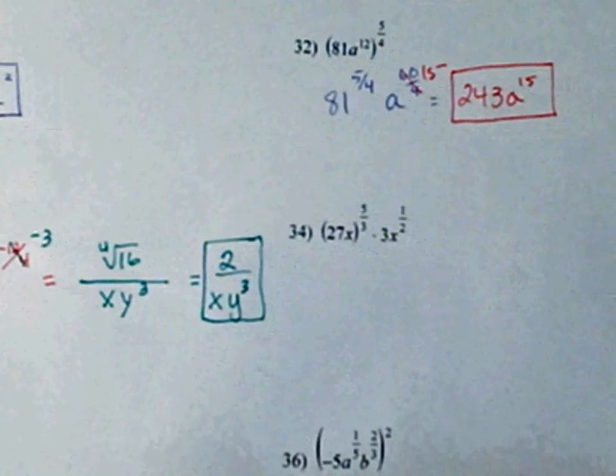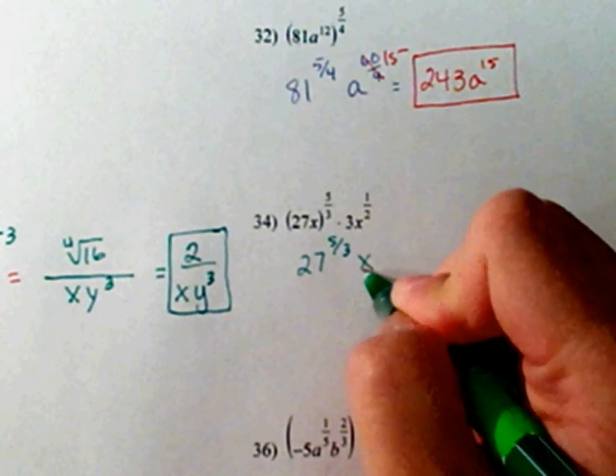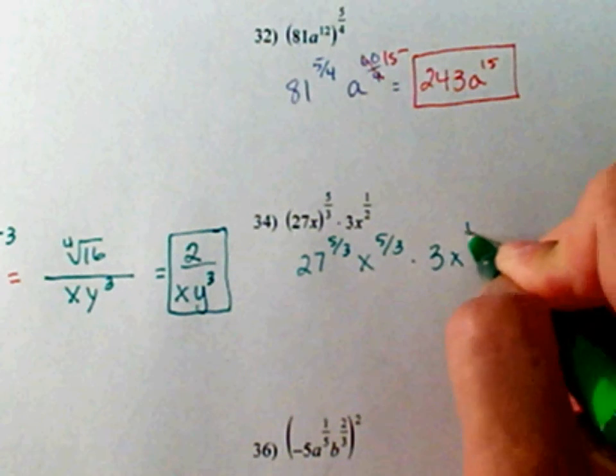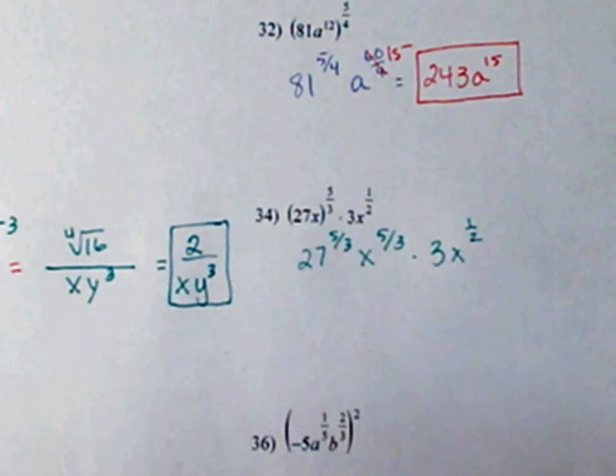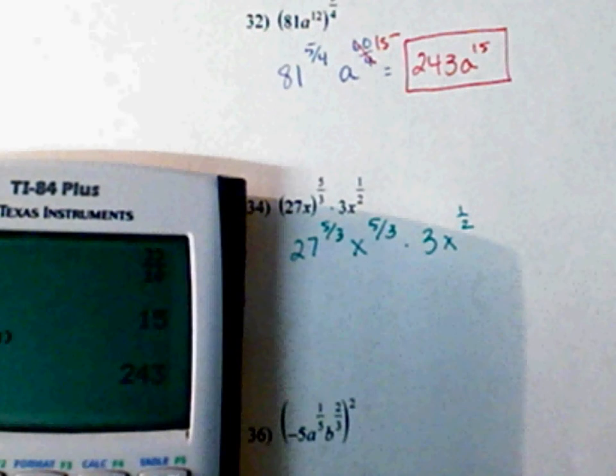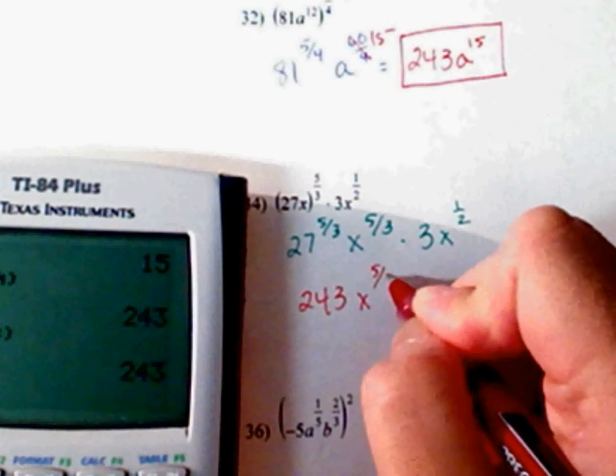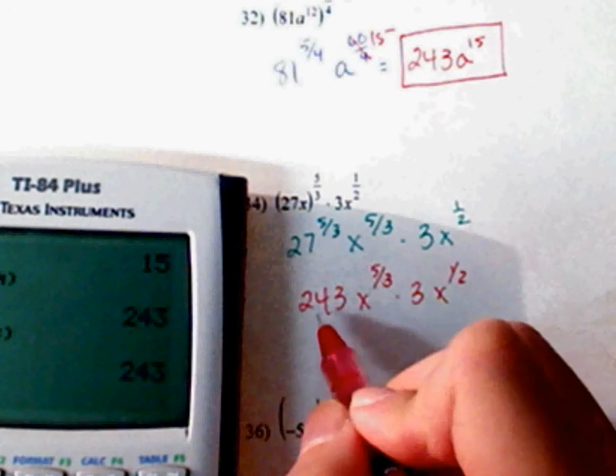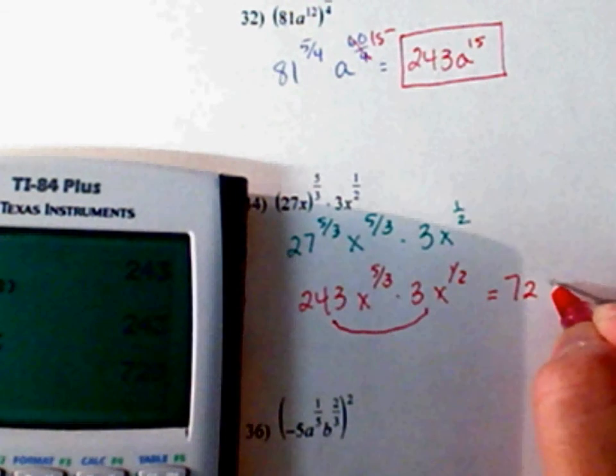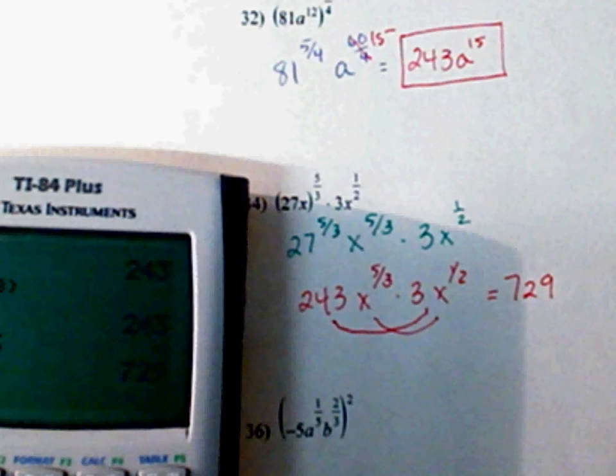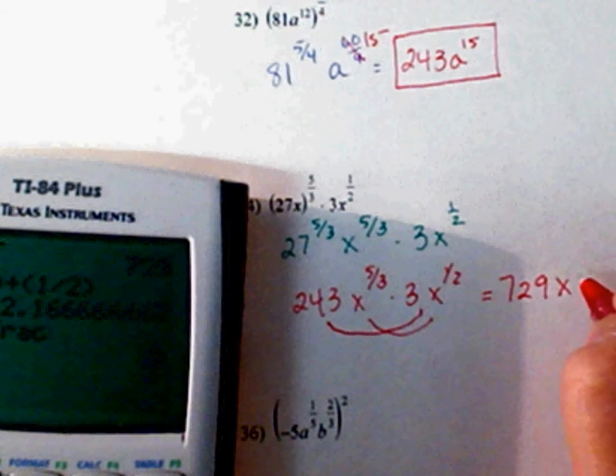Number 34. 27 is also to the 5 over 3 power x. 5 to the 3rd times 3x to the 1/2. What is 27 to the 5/3? See if you can simplify that. Try it on your calculator first if you have to. That's the same thing as 243 x to the 5/3 times 3x to the 1/2. Notice these two numbers you can multiply together. That gives you 729 your like bases add your exponents. And x comes out to be 13 over 6.